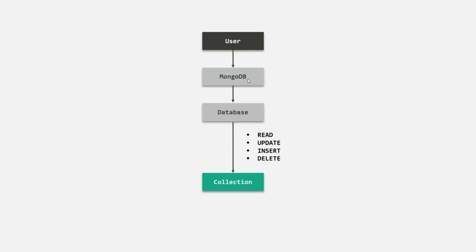But when building a real-world application, you might want to restrict access to the databases in MongoDB server. Not everyone should have the right to access the databases and perform read-write operations on the collection. Also, if a user has access to the MongoDB server databases, they should be restricted to only those databases they are supposed to work with, and not all databases. Furthermore, not all users should have access to write data in the database — some users should have only read access.